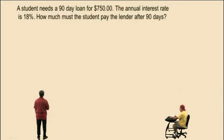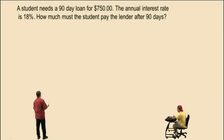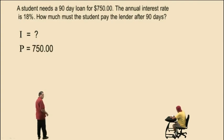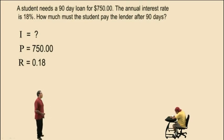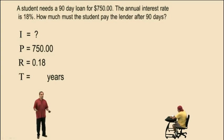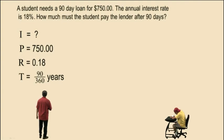Let's do our first problem. A student needs a 90-day loan for $750. The annual interest rate is 18%. How much must the student pay the lender after 90 days? We need to calculate the interest first. Our principal is $750. The interest rate is 0.18 — remember, convert the percent to a decimal by moving the decimal two places to the left. T is the time in years: since accounting uses a 360-day year, T is 90 over 360.